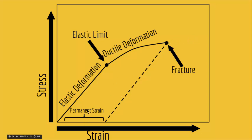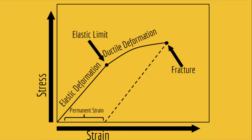In the ductile deformation region, you have permanent strain — after you put stress on the material and strain it, the material does not go back to its original shape. So hopefully by now you understand the different stages of deformation depending on the amount of stress put on a rock and what type of strain they produce. And with this, we come to the end of our lecture.